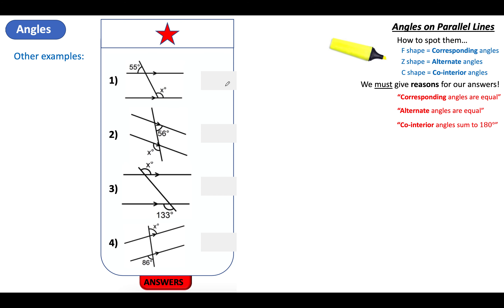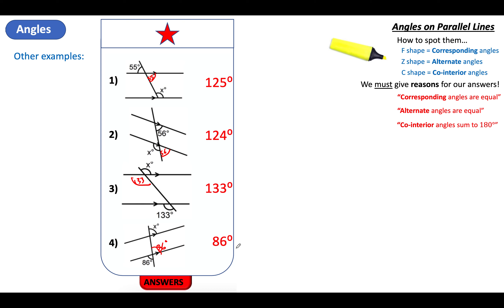For that set of multi-step problems, the answers are: the first is 125 degrees; x is 124 degrees; the third angle is 133 degrees; and the last one is 86 degrees. You might have used corresponding then co-interior, or vertically opposite then alternate — various combinations work as long as you get the right angle.